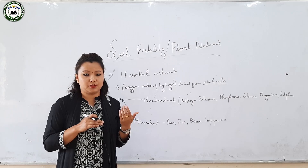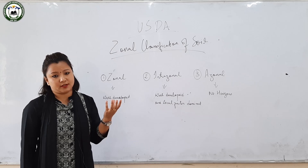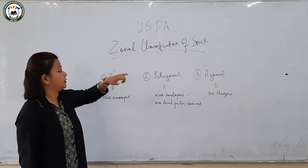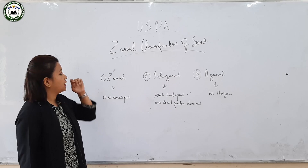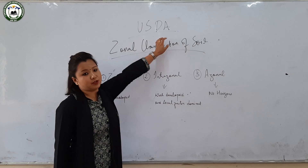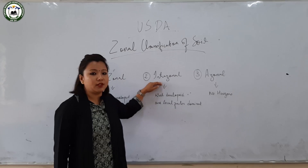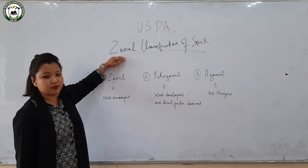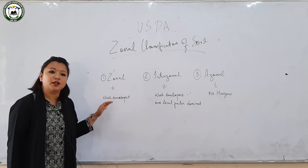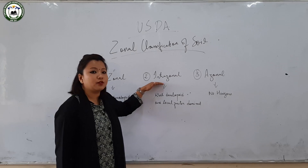Coming to the classification of soil: there are several systems that classify soil based on certain conditions. I would like to highlight the USDA soil classification, which is referred to in your syllabus. USDA stands for United States Department of Agriculture. The USDA classifies soil into three orders: zonal, intrazonal, and azonal soil — hence it is regarded as the zonal classification of soil. Zonal soil has a well-developed profile developed over a longer period of time.